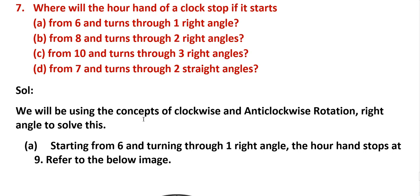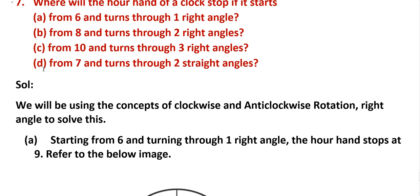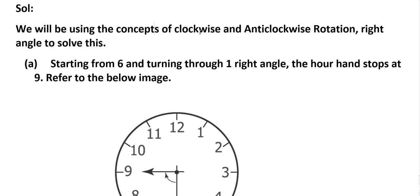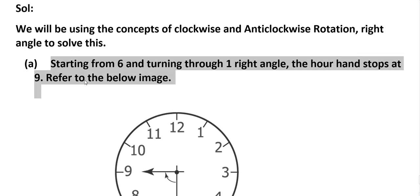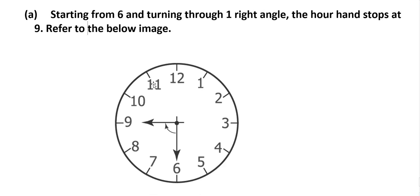Seventh problem: where will the hour hand of the clock stop if it starts from 6 and turns through one right angle? Using the concept of clockwise and anticlockwise rotation right angles. A: starting from 6 and turning through one right angle, the hour hand stops at 9. So from 6 to 9 is one right angle.